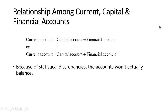What's the relationship among the current, capital, and financial accounts? This is called the balance of payments, so it should balance like a balance sheet. There are two equivalent equations: the current account minus the capital account equals the financial account; likewise, the capital account and the financial account together should equal the current account. It should balance, but because of statistical discrepancies — the numbers are estimated through surveys and other methods — it won't balance exactly.